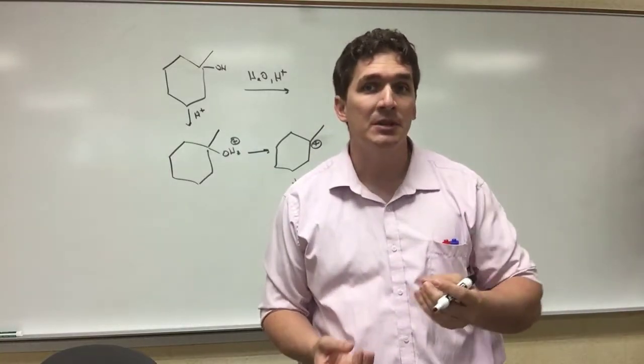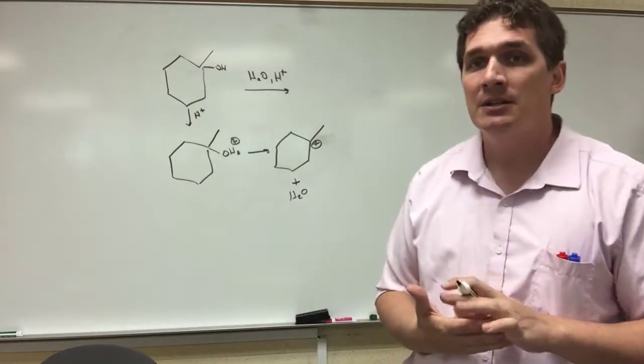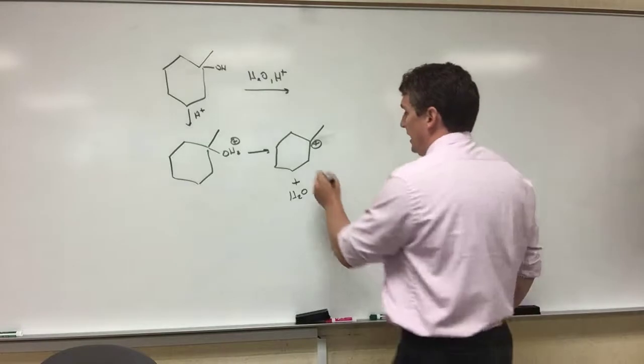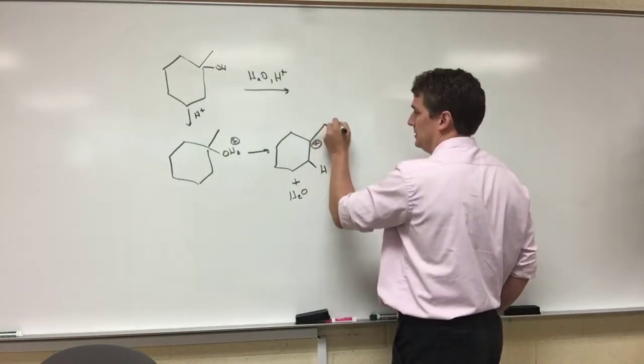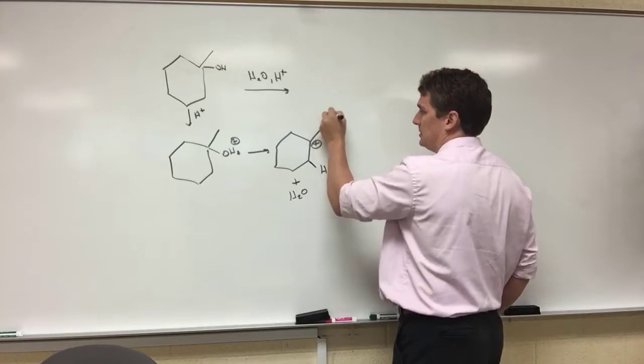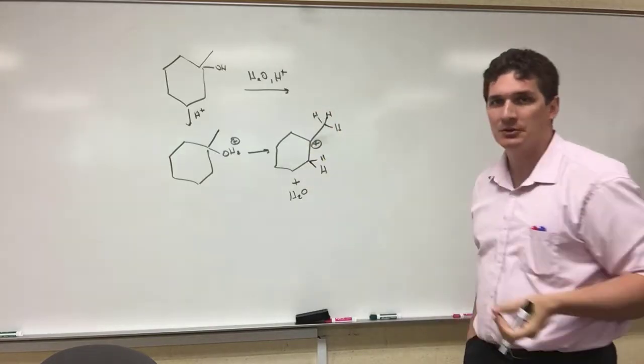Now do we have a carbocation? That's the case where we could have issues of rearrangement. The big thing here is that we now need to eliminate a hydrogen and if you look at our nearest carbons, these two are equivalent. We've got three on this CH3 group and we've got two on this carbon. So which way are we going to go?